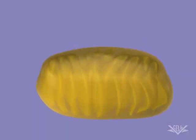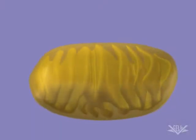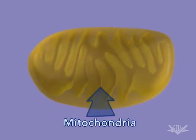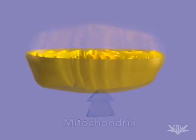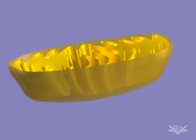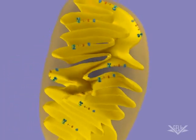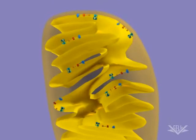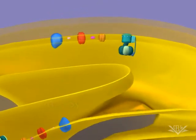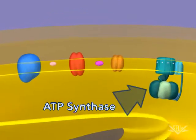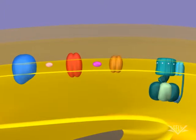Gradients and the potential energy they create are key aspects of the biological world. A good example of the use of a gradient occurs in the mitochondria when ATP is synthesized. ATP is synthesized by ATP synthase, a large complex of membrane-bound protein. Here we see ATP synthase, along with other membrane-bound proteins.